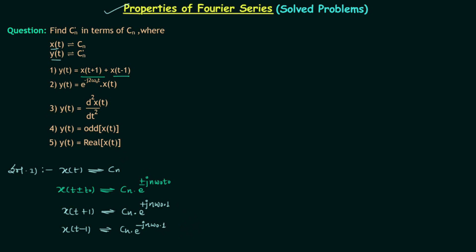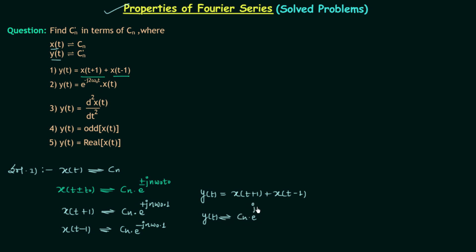Now we use the linearity property to find the coefficient of y(t). Since y(t) = x(t+1) + x(t-1), when two signals are added their coefficients are also added. So the coefficient of y(t) is cn·e^(jnω₀) + cn·e^(-jnω₀).